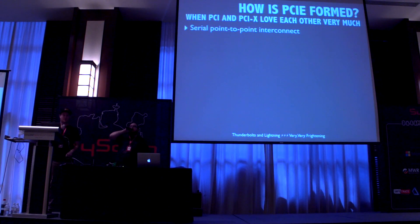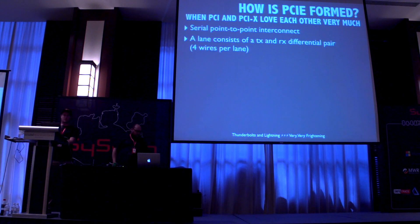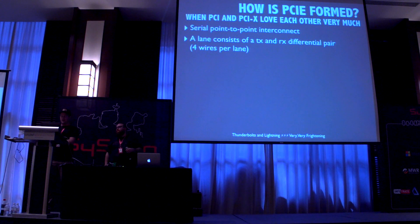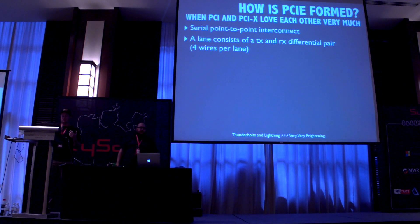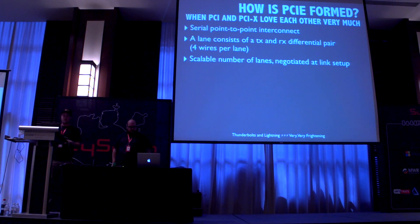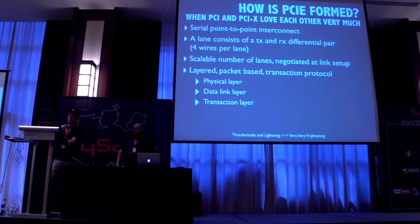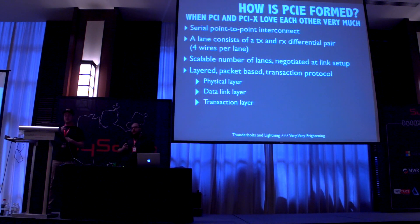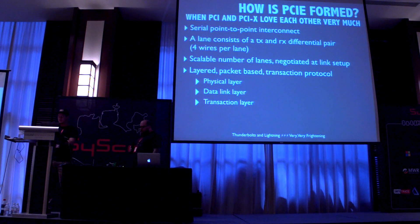PCI Express is basically the love child of PCI and PCIX. It's a serial point-to-point interface consisting of lanes, where each lane has a transmit and receive differential pair — four wires per lane. A differential pair uses two complementary signals to increase resistance to electromagnetic noise on a high-speed bus. The number of lanes is scalable and negotiated at link setup time. It is a layered, packet-based transaction protocol with a physical layer for clocking and synchronization, a data link layer for transaction limiting and power management, and a transaction layer.